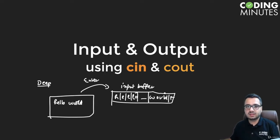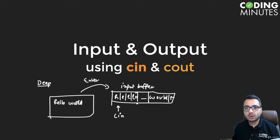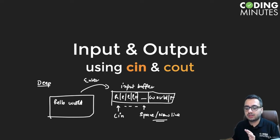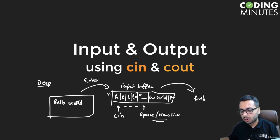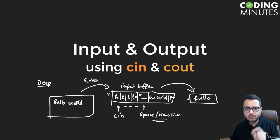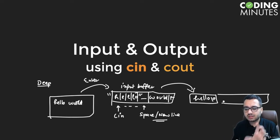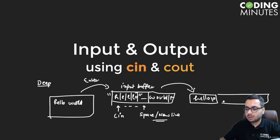Now cin starts reading this input one by one. As soon as it sees a whitespace — which can be a space or a newline — the cin functionality that is present in the header file does not process whitespaces. It stops and stores only the word 'hello' in your input array. Although the array is big, only 'hello' gets stored, and the space is automatically replaced by a null character. That is the reason cin does not work with whitespaces.